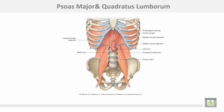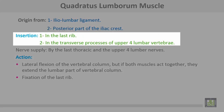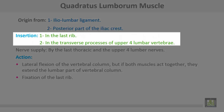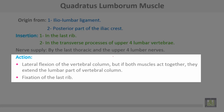Psoas major muscle and its origin here. The tendon passes downwards. The quadratus lumborum muscle takes origin from the iliolumbar ligament and from the posterior part of the iliac crest, and is inserted into the last rib and the transverse processes of the upper four lumbar vertebrae. The nerve is supplied by the last thoracic and the upper four lumbar nerves. Action: lateral flexion of the vertebral column, but if both muscles act together, they extend the lumbar part of the vertebral column.